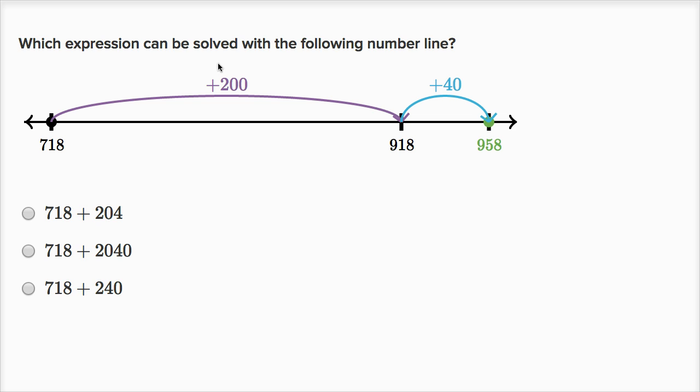Which expression can be solved with the following number line? So let's see, we're starting at 718, and then we're adding 200, and then we're adding 40 to get to 958. So this is really 718 plus 240, which is this choice right over there. This is kind of strangely fun.